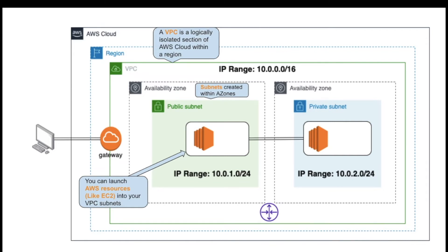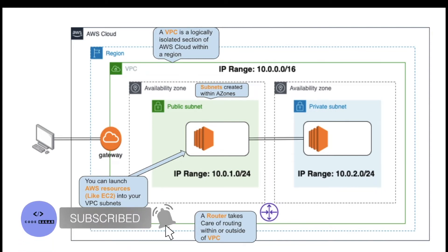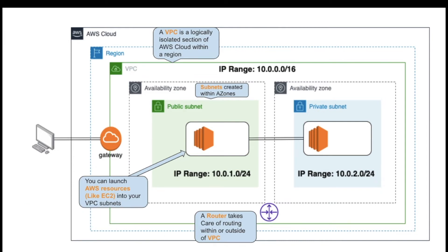Before creating any infrastructure in AWS cloud, next we have a router. You don't really see the VPC router but it exists, and we can interact with it by configuring route tables. A router takes care of routing within or outside of the VPC. It takes care of all routing for connections going outside of the subnet — whether you want to send data to another subnet, out to the internet, or some other network. In AWS, you configure the route tables and they configure the VPC router for you.